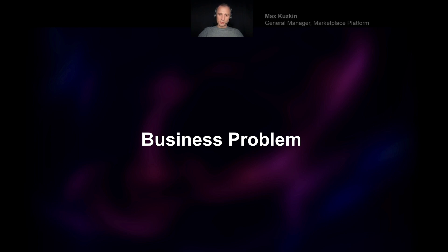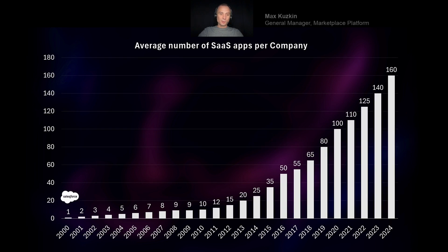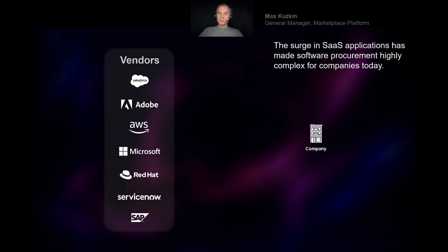Before we go there, let's make sure that we understand the business problem we're trying to solve. This problem was essentially created by Salesforce when they launched the first major SaaS application back in 1999 or 2000. Since then, the number of SaaS applications has been steadily growing, and as of 2024, the average number of SaaS applications that an enterprise consumes is somewhere around 150 to 160.